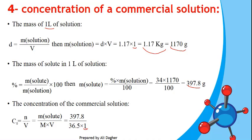Whatever volume you choose in step one, you must use the same volume in step three. If you take 2 liters, use 2 liters; if 100 mL, use 0.1 L. Using the same volume throughout, we obtain the concentration equal to 10.9 mol/L.